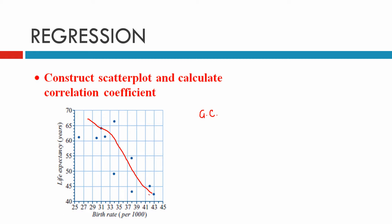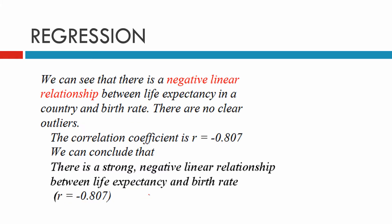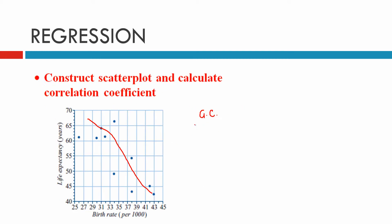Now we're going to calculate the correlation. When we do, and you've been shown how to do it on your calculator, we can see that there is a negative linear relationship. We marked the line between life expectancy in the country and birth rate, and there were no clear outliers.